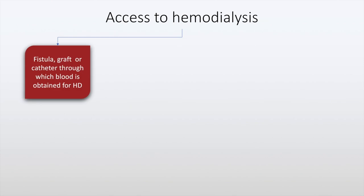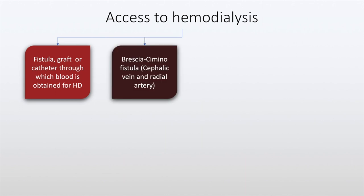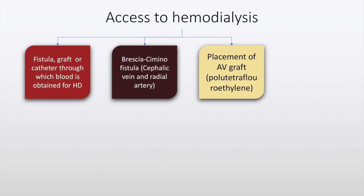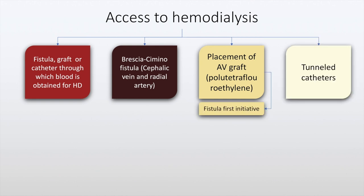The access to hemodialysis include fistula, graft, or catheter, through which blood is obtained for hemodialysis. The Brescia-Cimino fistula, which is a fistula between the cephalic vein and the radial artery, is used most commonly. At present, placement of an arteriovenous graft, which is made of polytetrafluoroethylene, is preferred and this is part of the fistula first initiative. Tunneled catheters may also be used. Thrombosis of graft remains an important complication of hemodialysis access procedures.